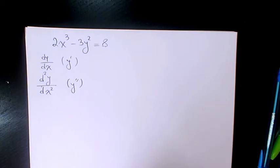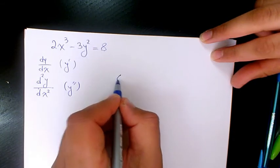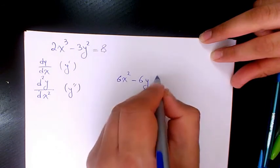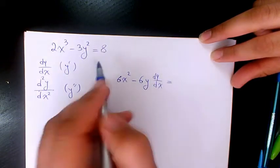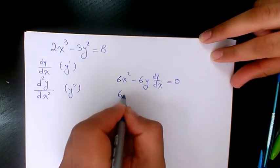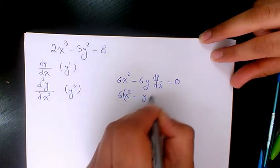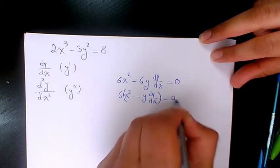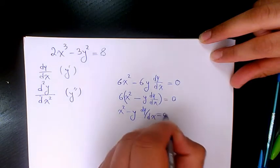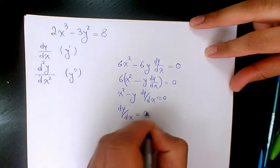Taking the derivative: 6x² - 6y dy/dx = 0. Simplifying by dividing through by 6 gives x² - y dy/dx = 0. Isolating dy/dx, we get dy/dx = x² over y.